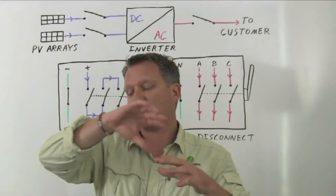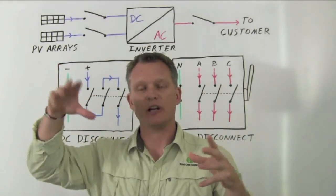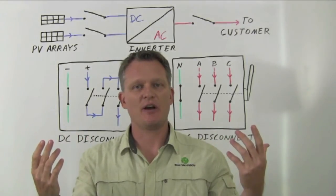Now, because the current actually goes to zero twice during an alternating current cycle, the arc extinguishes itself very quickly because that current actually goes to zero a couple of times.